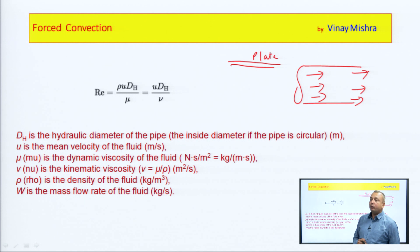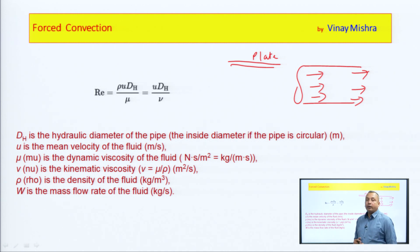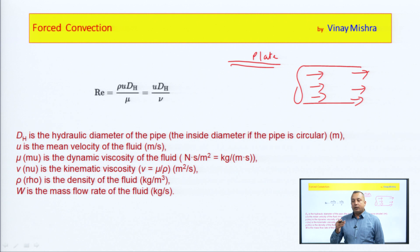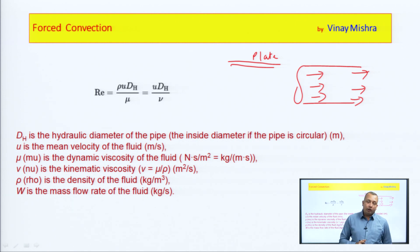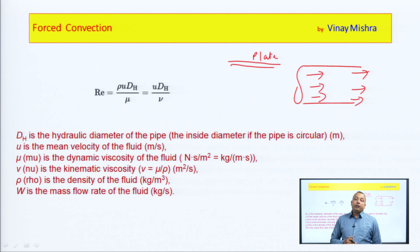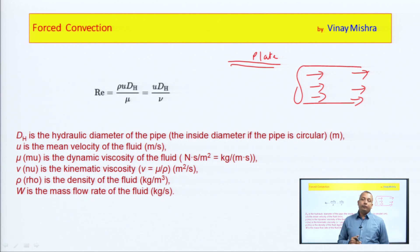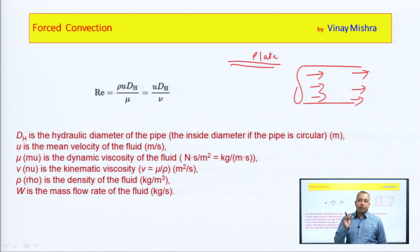Now if we look at the values: in general we take around 2000 as the critical Reynolds number value — the value at which the flow changes. As velocity increases, the flow keeps changing. For laminar flow, the Reynolds number is below a certain point. If the Reynolds number is less than that certain value, we say the flow is laminar. If it is greater than that value, the flow is turbulent.